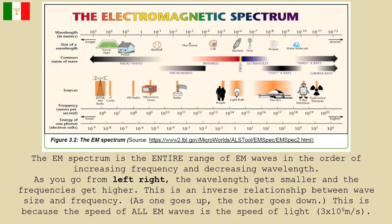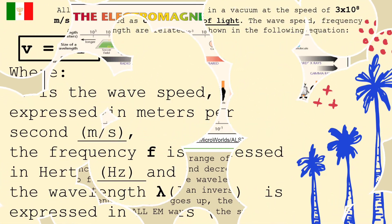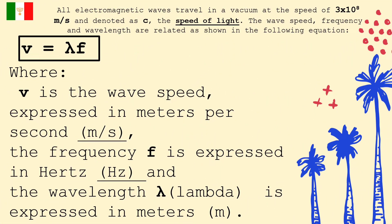And this is because the speed of all EM waves is the speed of light, and that is 3 times 10 raised to 8 meter per second, or 300 million meter per second. All electromagnetic waves can travel through a medium, but unlike other types of waves, they can also travel in a vacuum or empty space. They travel in a vacuum at the speed of 3 times 10 raised to 8 meter per second, and denoted as C, or the speed of light.